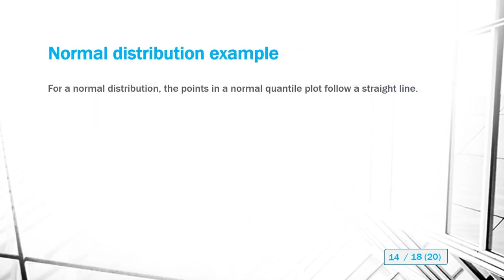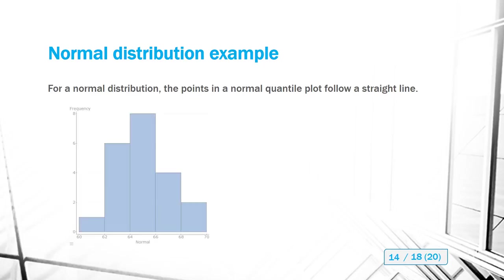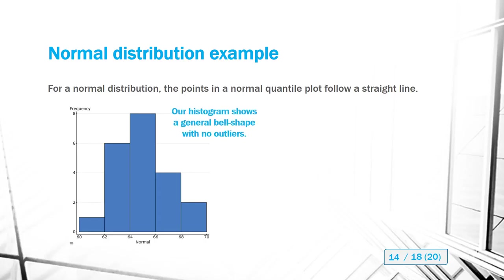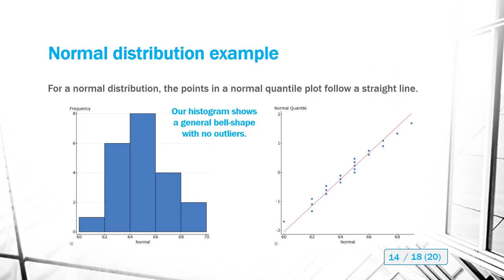Let's look at an example of how this might look. If we have a normal distribution, the histogram should show a general bell shape — starts low, goes high in the middle, and comes back down — with no outliers, so we meet the first two requirements. Then making the normal quantile plot, the points more or less follow the straight line shown in red. That's what we want to see — points that generally follow a straight line.